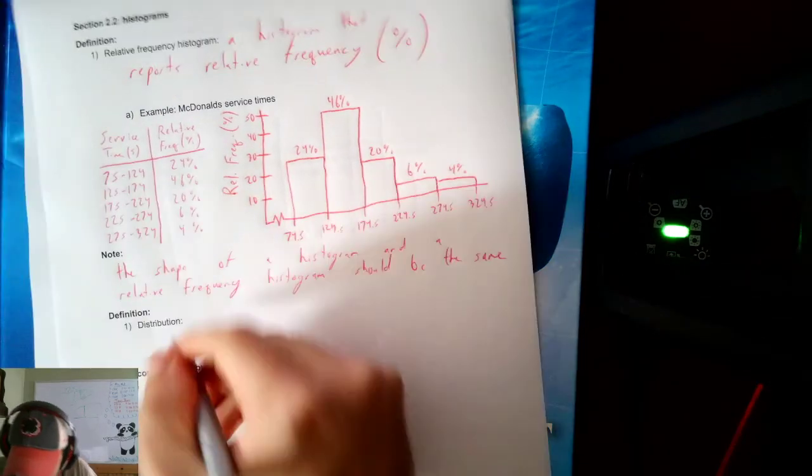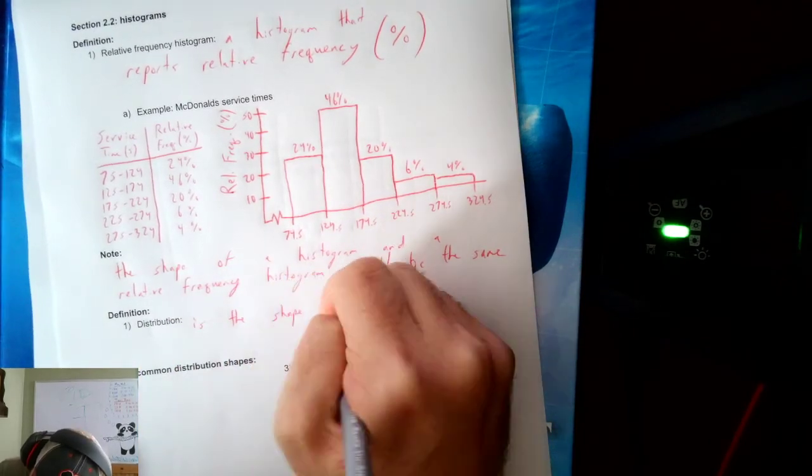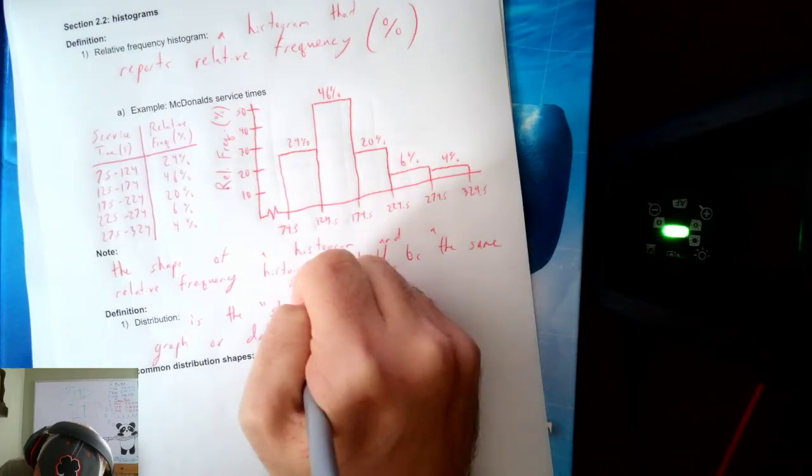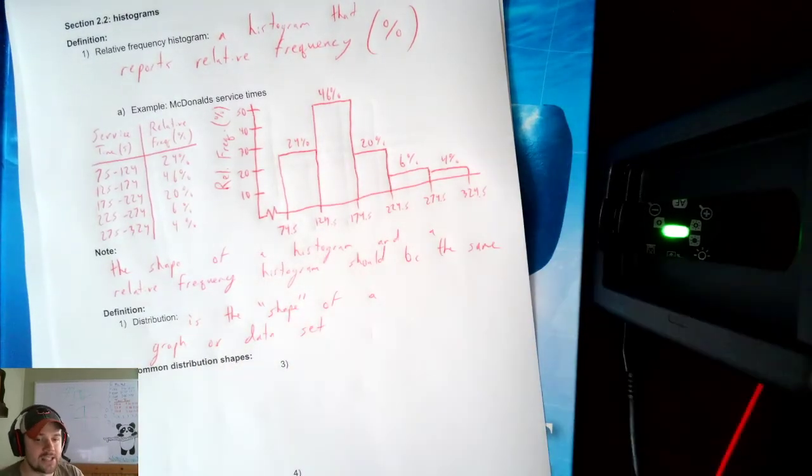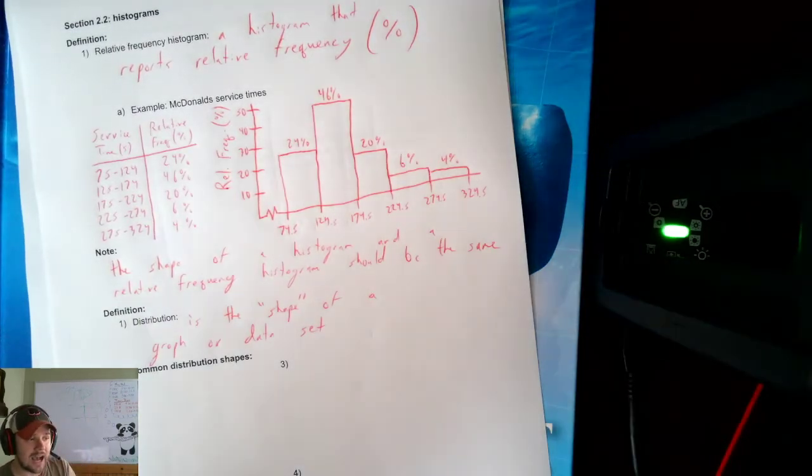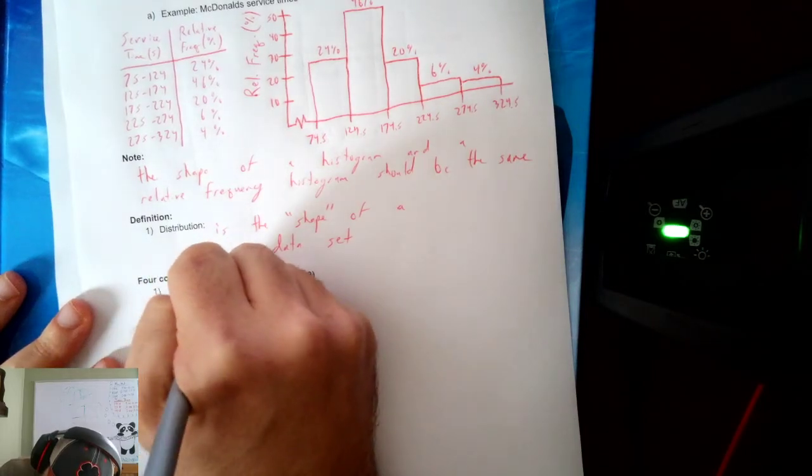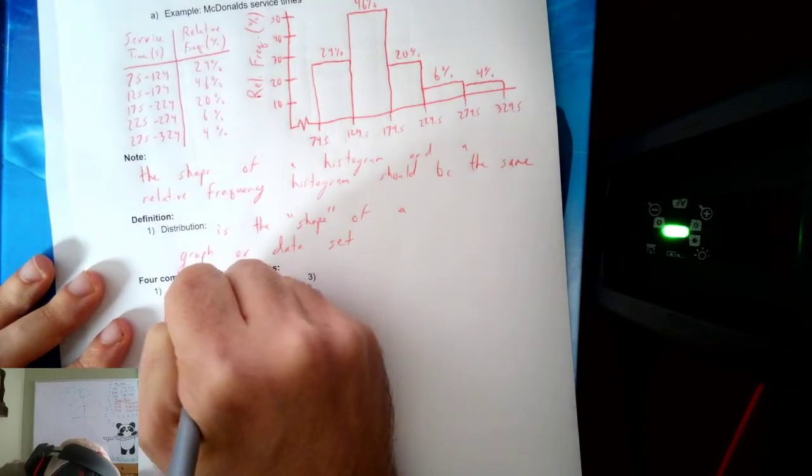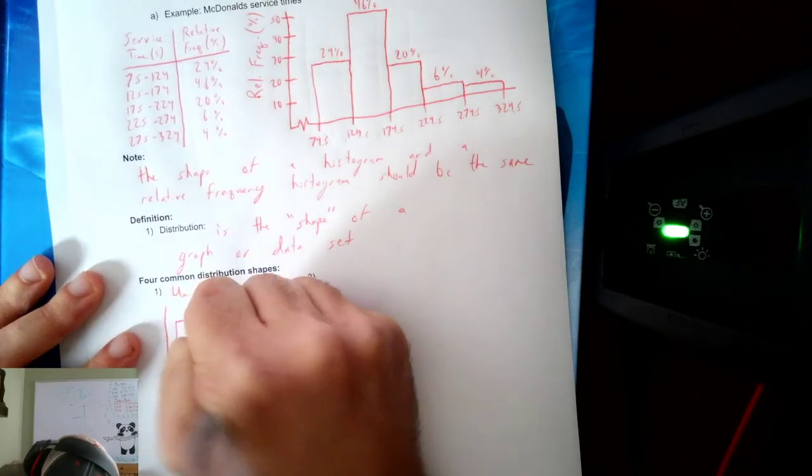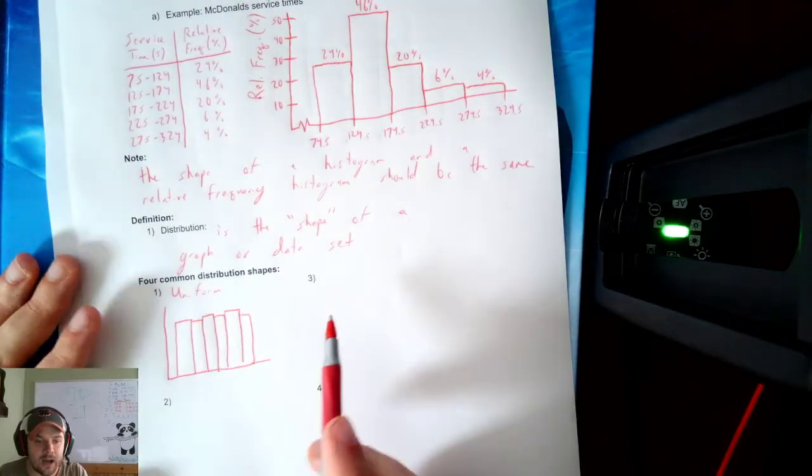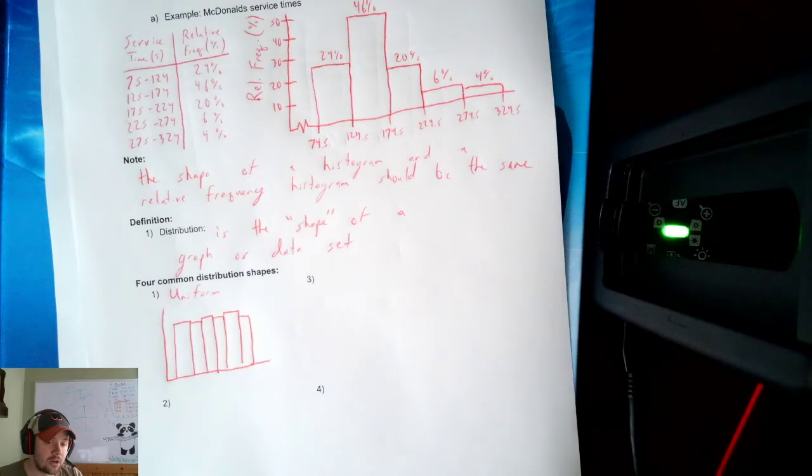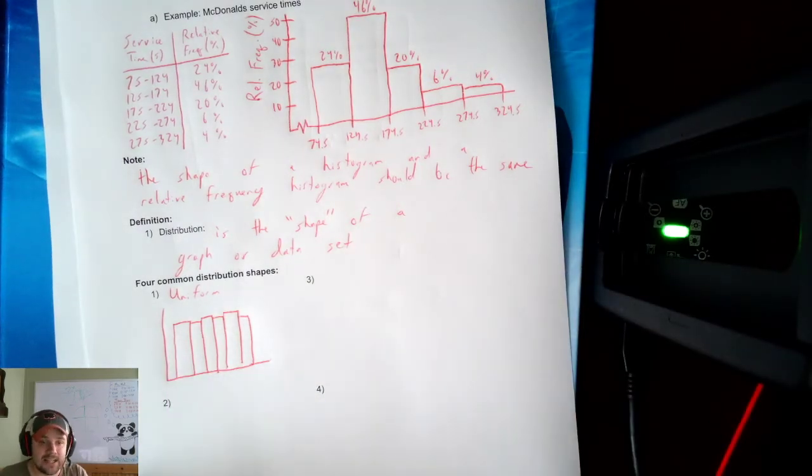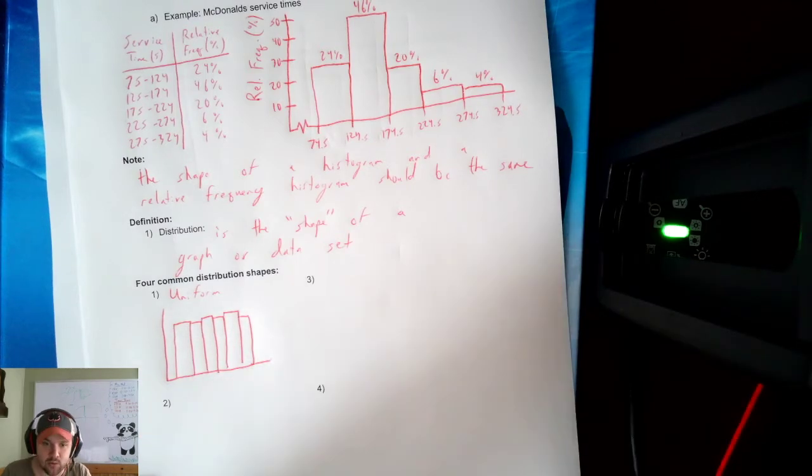Now, what is a distribution? A distribution is the shape of a graph or data set. And I use the word shape as a general term. We'll see there's several different distribution types. We're actually going to talk about four common distributions. The first one is uniform. And let's draw a quick example of a histogram that is uniform. So maybe we've got some bars. Maybe some are taller than others, but they're all roughly the same height. They have a nice uniform height.